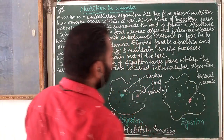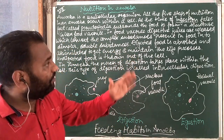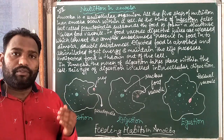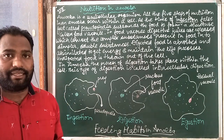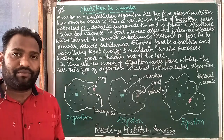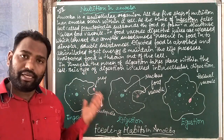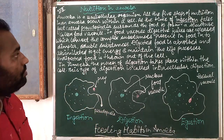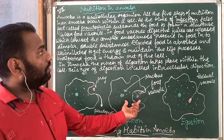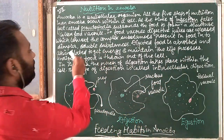In these food vacuoles, many digestive juices are released, which convert the complex substances present in food into simpler, soluble ones. Before nutrients can be taken from food, conversion from complex to simpler form is necessary. Without these soluble or simpler forms, the body of amoeba or other organisms cannot absorb the nutrients. The function of vacuole digestive juices is to make complex food into simpler, soluble substances.